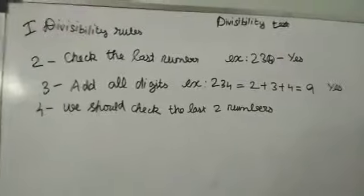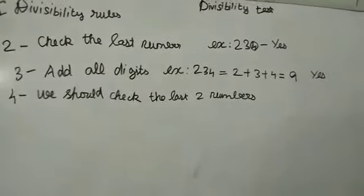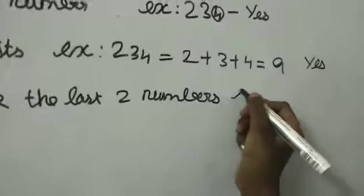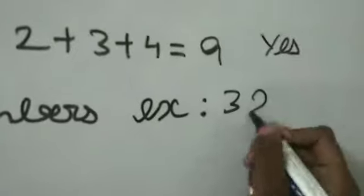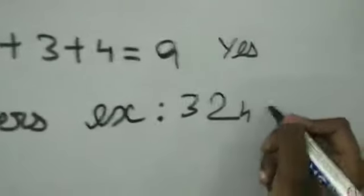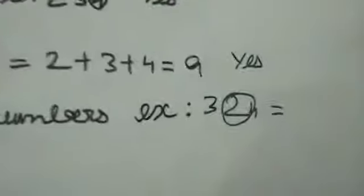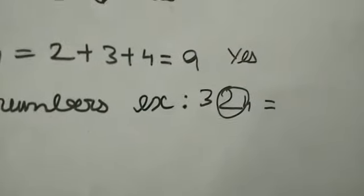For 4, we should check the last two numbers. Example: if they gave 324, we should check the two numbers 24.